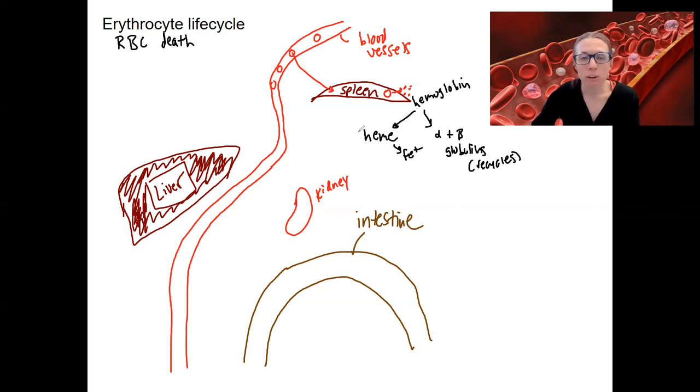Heme is going to actually be converted in the spleen to something called bilirubin. You may have heard of bilirubin and you probably think of it as a liver thing. Liver will be important. So this bilirubin is going to go back into the blood and it's actually going to be bound to albumin, serum albumin, and that's together going to travel to the liver.